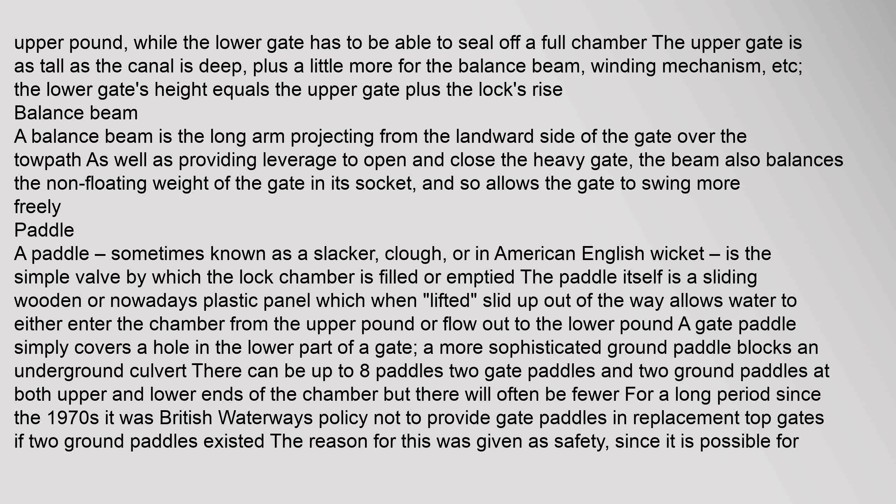The upper gate has to be able to seal off the upper pound, while the lower gate has to seal off a full chamber. The upper gate is as tall as the canal is deep plus a little more for the balance beam and winding mechanism. The lower gate's height equals the upper gate plus the lock's rise. A balance beam is the long arm projecting from the landward side of the gate over the towpath; as well as providing leverage to open and close the heavy gate, the beam balances the non-floating weight of the gate in its socket, allowing the gate to swing more freely.